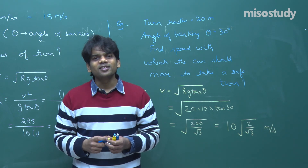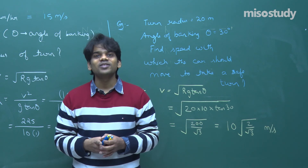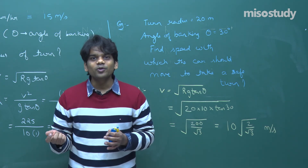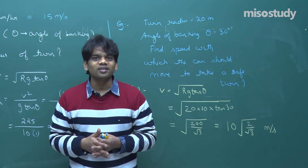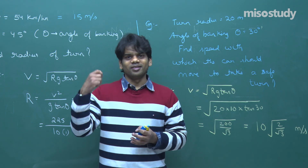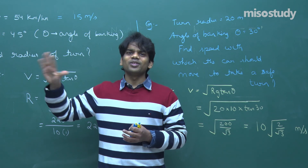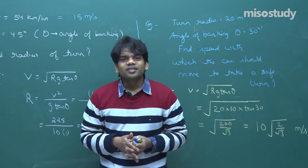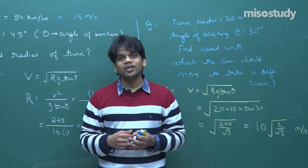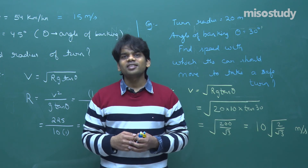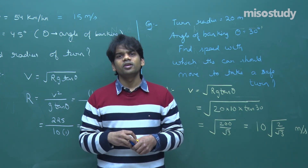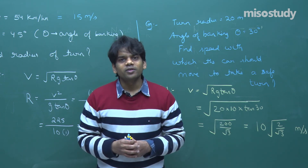Quick recap: Today we understood centripetal force — required for circular motion, provided by some external agent toward the center. We saw that a stone on a string can never be whirled in a perfectly horizontal circle. We studied cyclist bending (tan θ = v²/rg), turns on horizontal roads (friction provides centripetal force, V ≤ √μRg), and turns on banked roads (v = √(Rg tanθ)). Next class: banked road with friction and vertical circle. Thank you, this is Abhinav signing off.